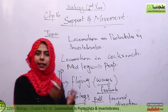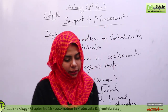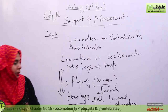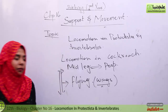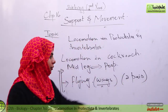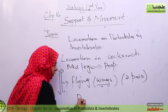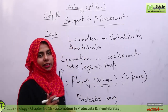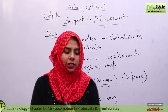The same process happens on the other side of the cockroach, and this is how the cockroach moves. Now if we talk about the flying mechanism, the wings are involved. You know how many pairs of wings cockroach has — it usually contains two pairs of wings. One pair is on the anterior side and the other is on the posterior side. The posterior wings are responsible for flying.